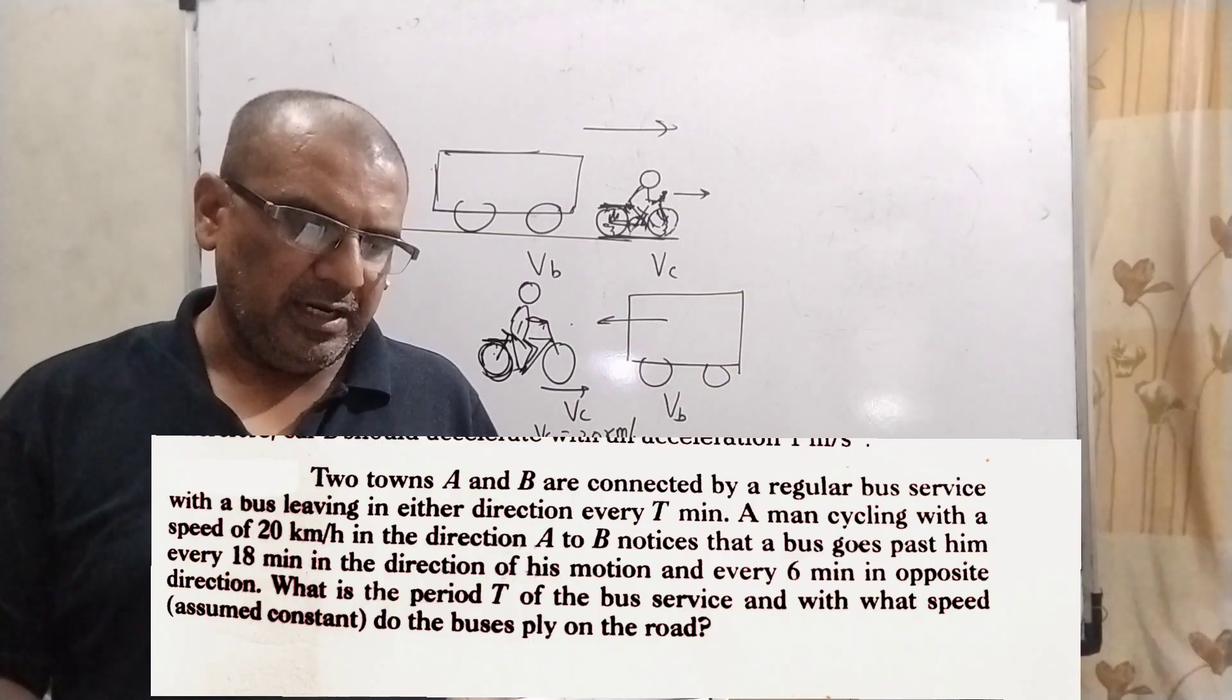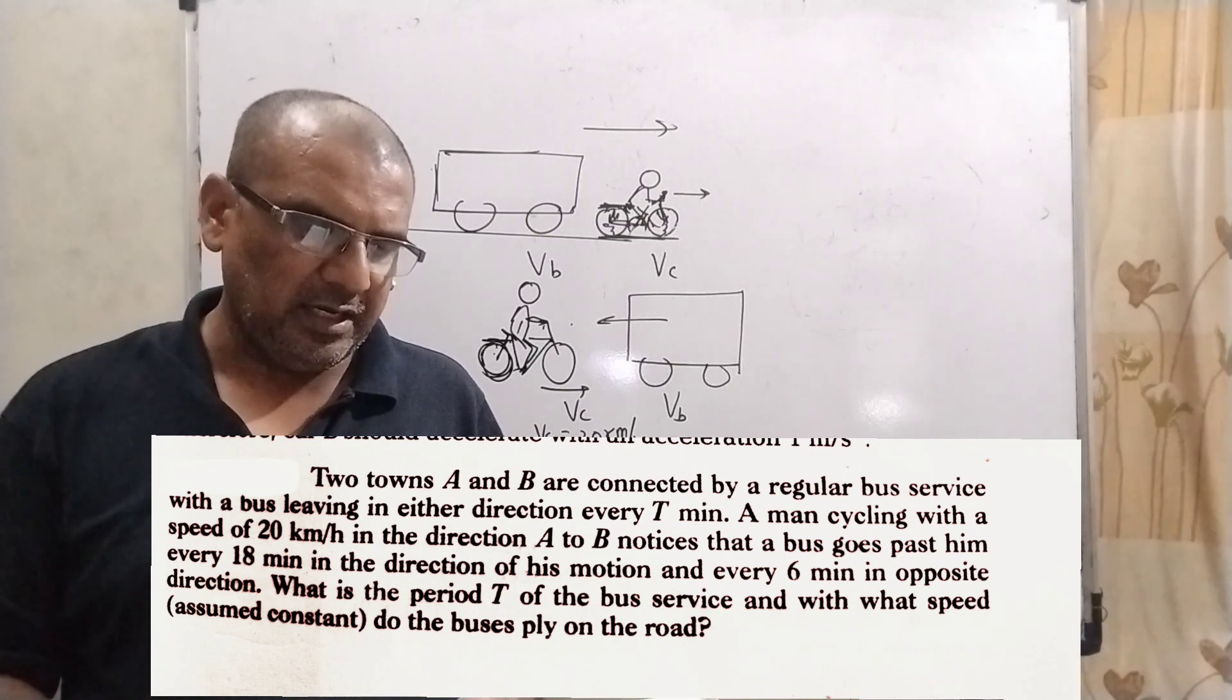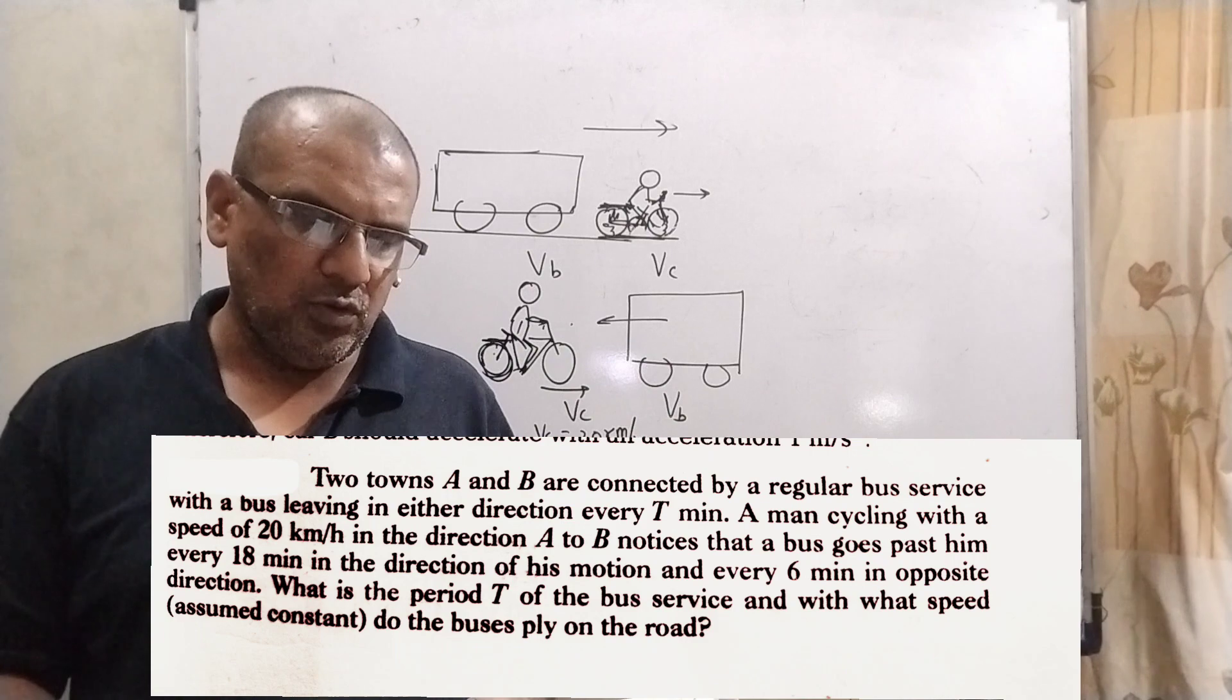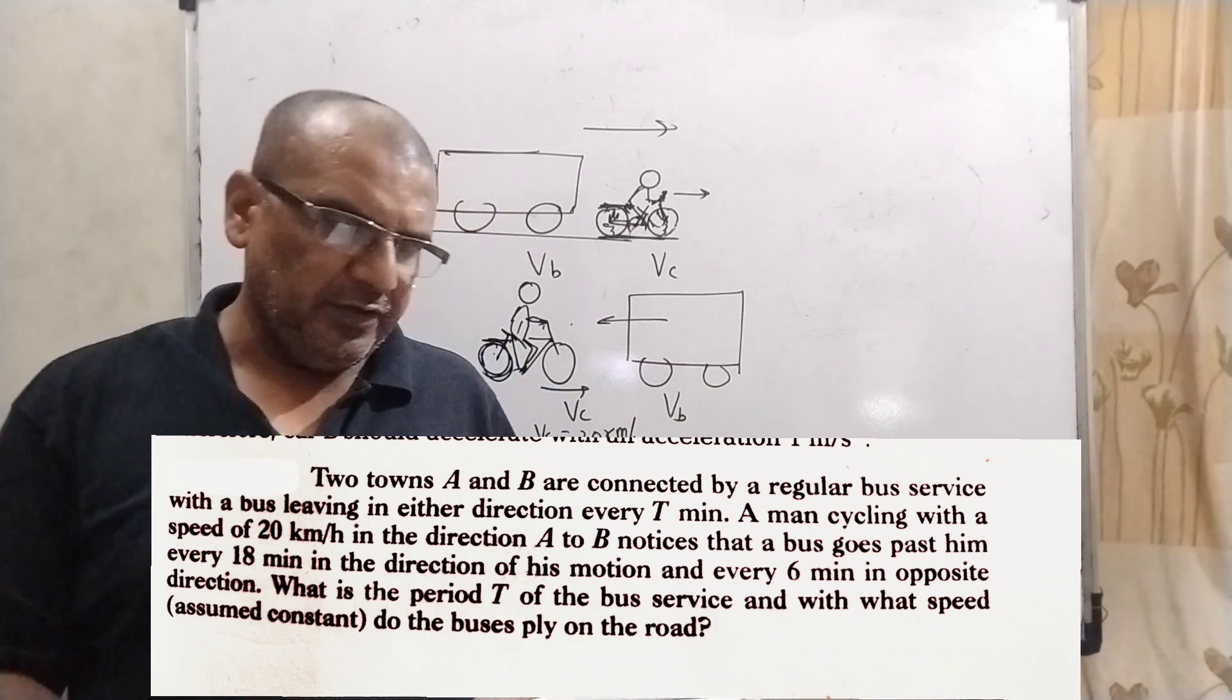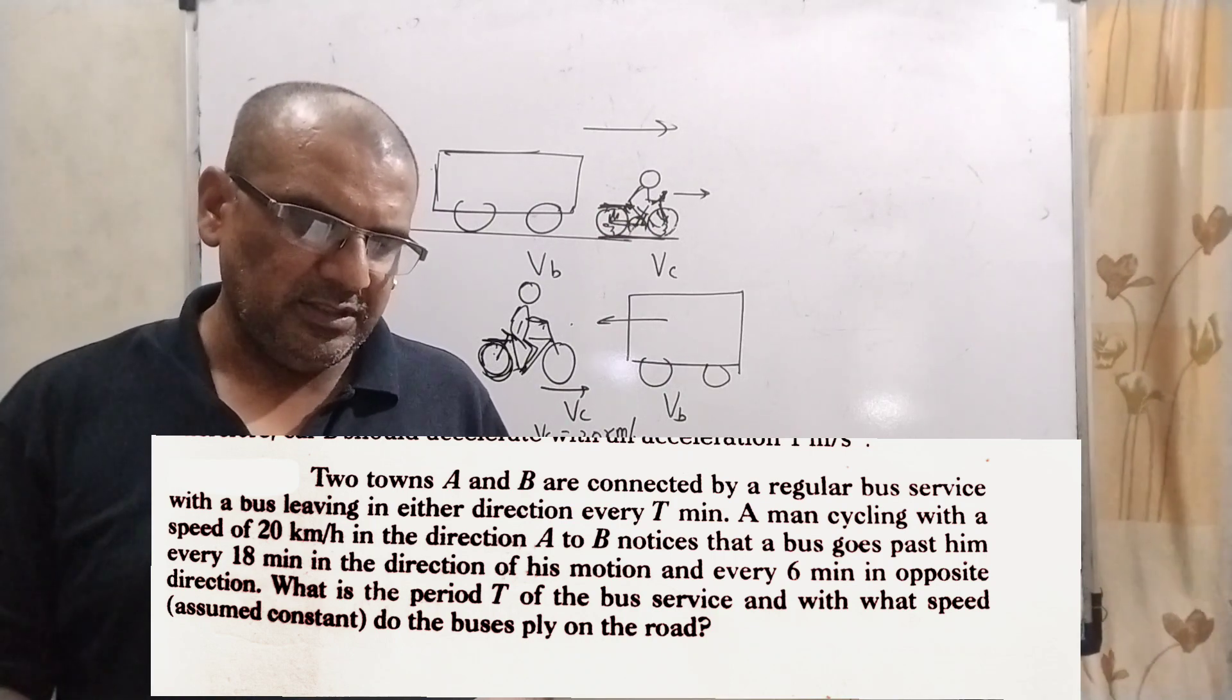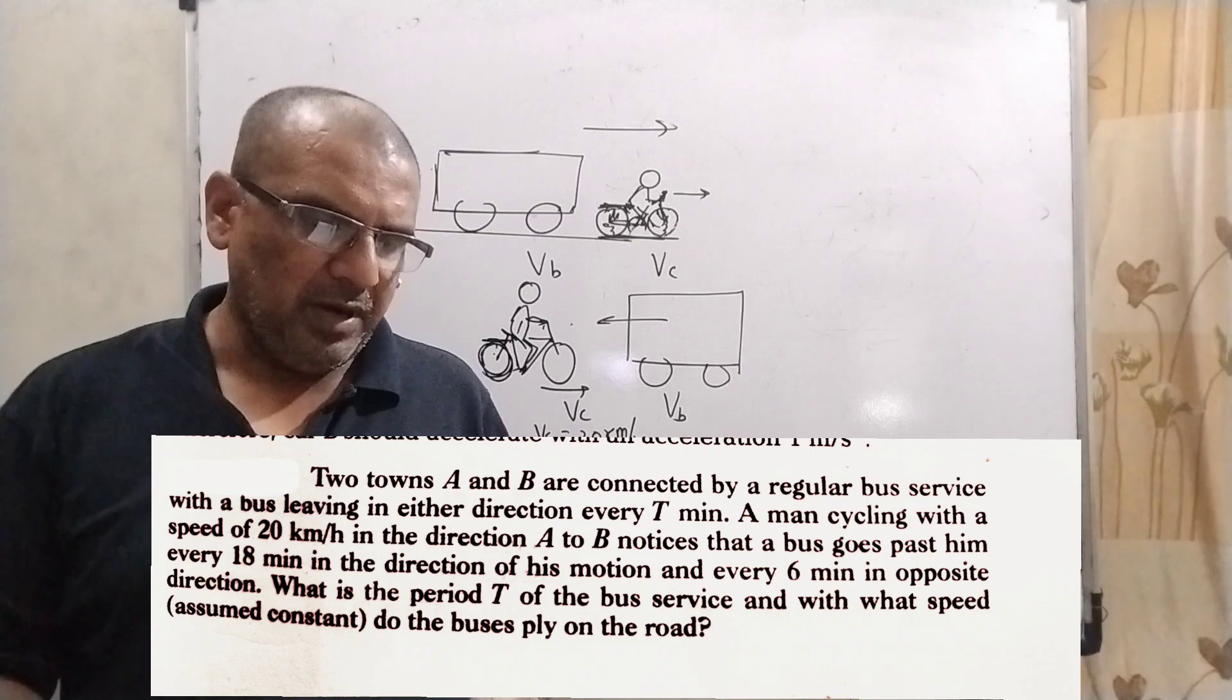Two towns A and B are connected by a regular bus service with a bus leaving in either direction every 10 minutes. A man cycling with a speed of 20 km per hour in the direction A to B notices that a bus goes past him every 18 minutes in the direction of his motion and every six minutes in opposite direction. What is the period T of the bus service and with what speed do the buses ply on the road?